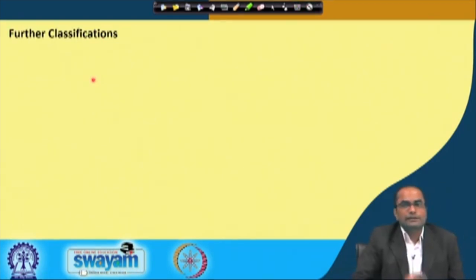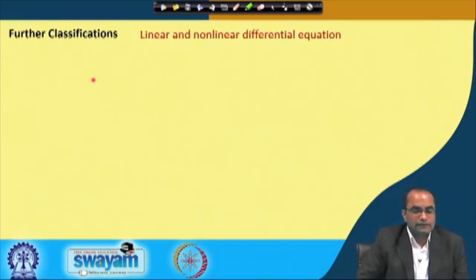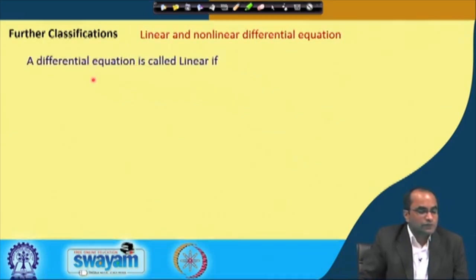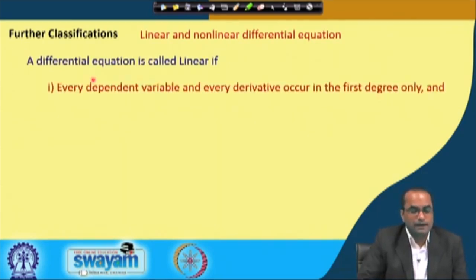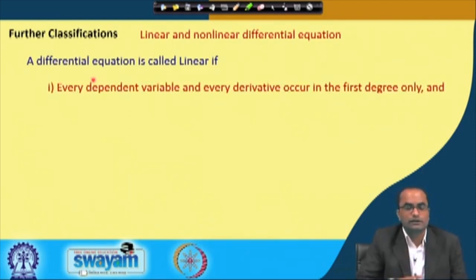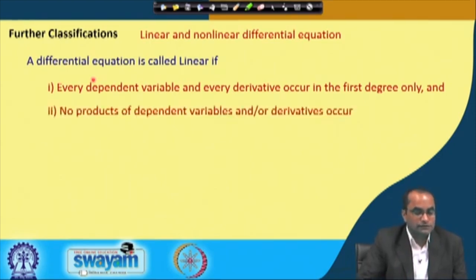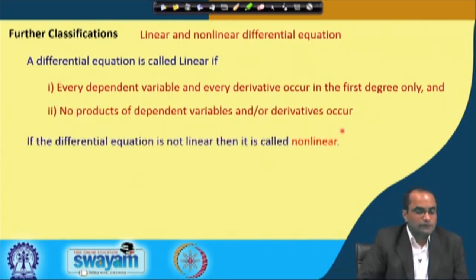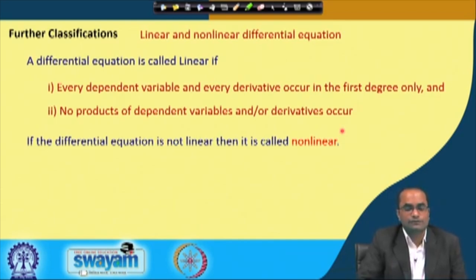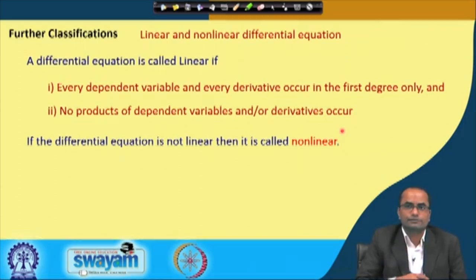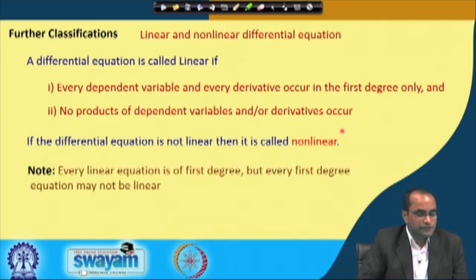Further classifications include linear and non-linear differential equations. A differential equation is called linear if every dependent variable and every derivative occurs in the first degree only — meaning no product or power of the dependent variable or its derivatives appears. If the differential equation is not linear, we call it non-linear, where a product of the derivative or the dependent variable with the derivative exists.